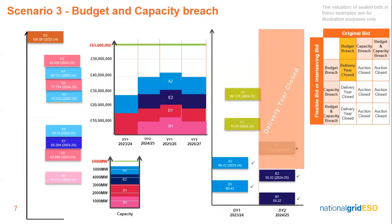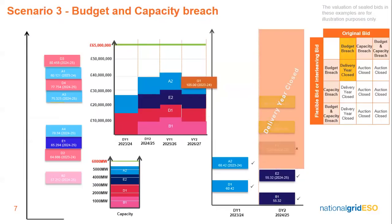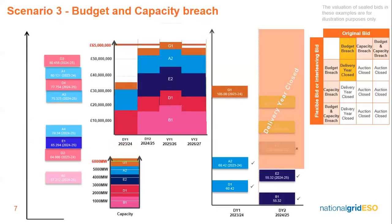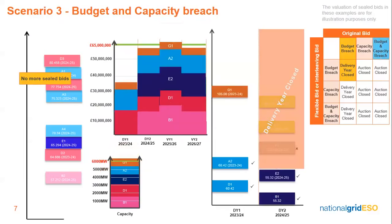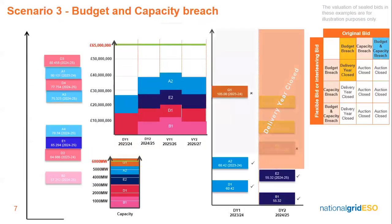All bids can be accepted in this delivery year, but we can continue up the stack trying to allocate bids for the remaining open delivery year. Bid G1 has breached both the budget and the capacity cap. There are no more sealed bids from Project G, so the chart on the right tells us that this would result in the closure of the auction.